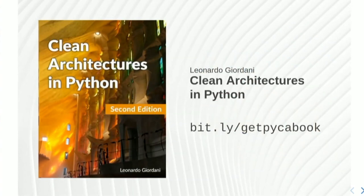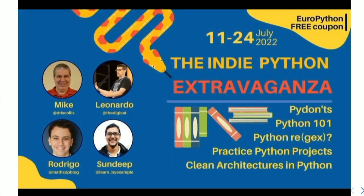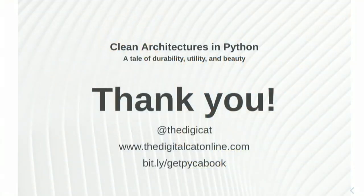I wrote a book about these concepts: Clean Architectures in Python. It's a free book. The example I showed today comes from the book, where I implemented it properly with TDD all the way, with a lot of error checking. The whole book is about that example — just retrieving a list of objects — implemented with both Postgres and MongoDB to show it's possible to use different databases. For EuroPython this week and next week, I'm offering the book and other books for free as a bundle worth $60. You can follow us on Twitter and check the URL on Limpub to get the bundle for free. I hope it was useful. Thank you.